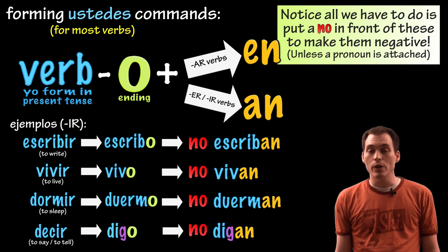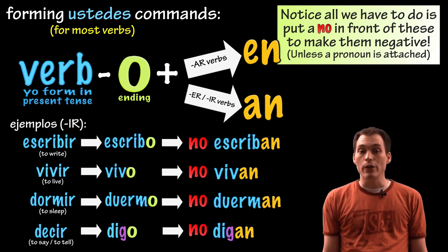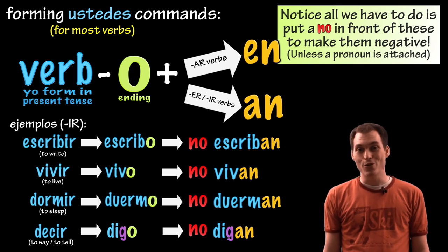To make these negative, just put a no in front. That simple. No escriban, no vivan, no duerman, no digan.